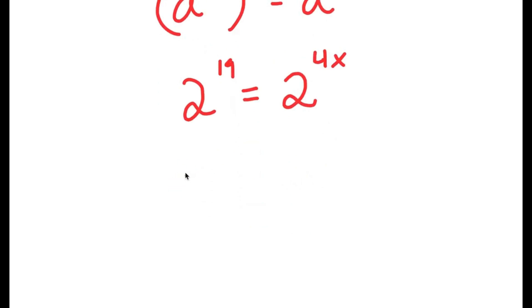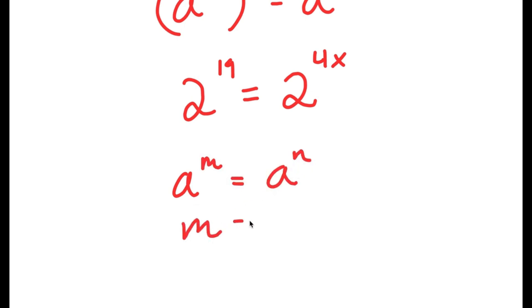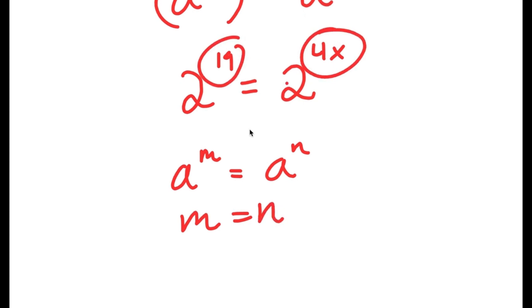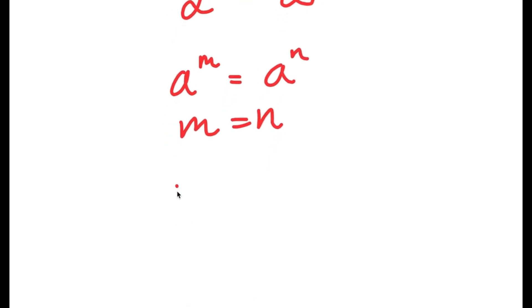Now, if I have something in the form a to the power of m is equal to a to the power of n, this means that m is equal to n. So in this case, 19 is equal to 4x.